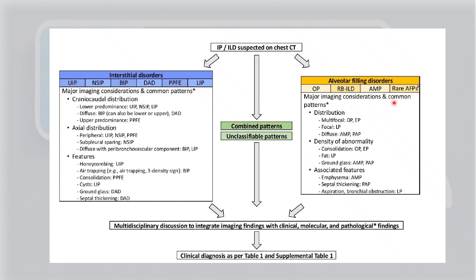Coming to alveolar filling disorders — basically classifying what fills the alveoli. If it is macrophages, it could be RB-ILD or AMP. If it is fibroblasts, it could be OP. If it is proteinaceous material, it could be PAP. If it is eosinophils, it could be AEP or CEP, which all come under rare alveolar filling pneumonias.